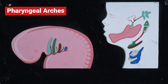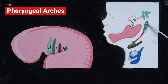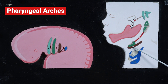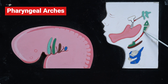The second pharyngeal arch cartilage is called Reichert's cartilage. This gives rise to the stapes, the styloid process, the lesser cornu of the hyoid, and the upper part of the body of the hyoid. Wherever only perichondrium is left, this develops into the stylohyoid ligament.